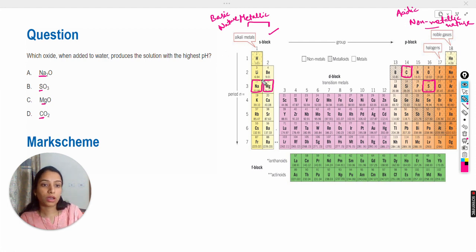So the most basic oxides are of the alkali metals, and here the alkali metal is sodium from the options given. The sodium oxide will be highly basic in nature and will have the highest pH, so the answer should be option A.